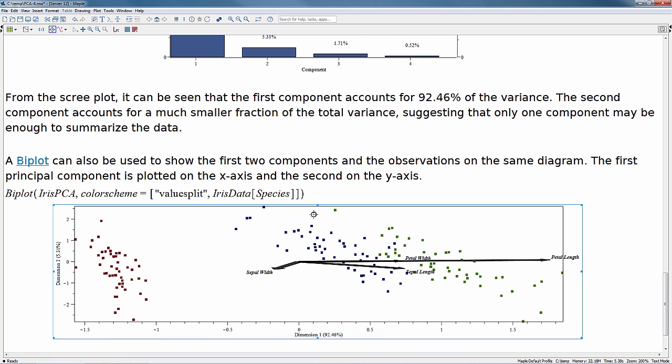It's important to note here, on the x-axis, we have our first dimension. This is where we have 92% of our variance explained. And dimension two is 5%.